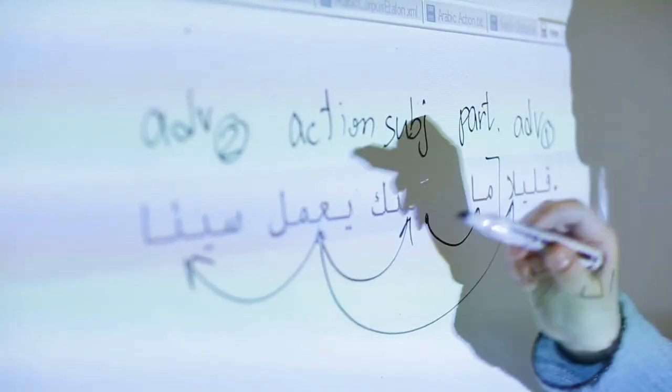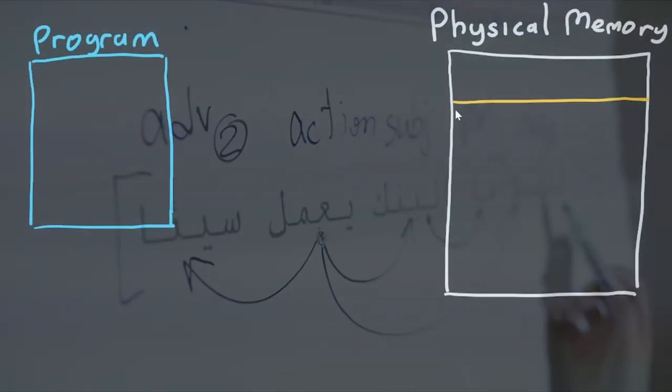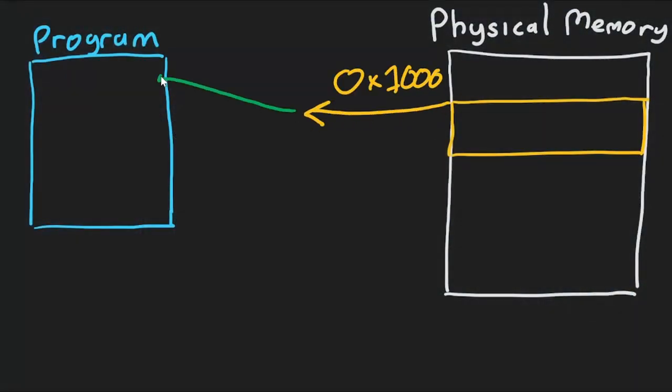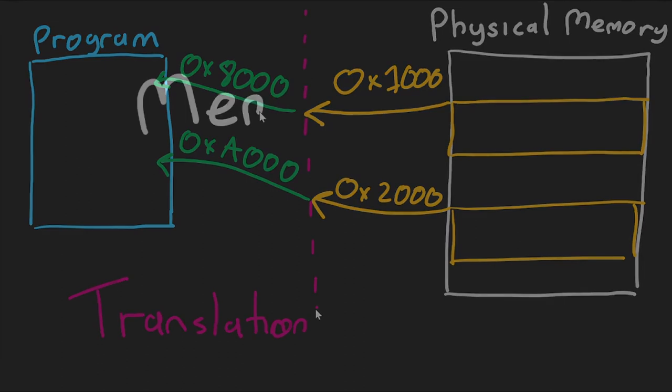The solution to both of these problems came in the form of memory address translation. The idea is to build a table of address locations in the computer's machine memory and then change the address. The thing that changes the address, or the table, is called a memory management unit.